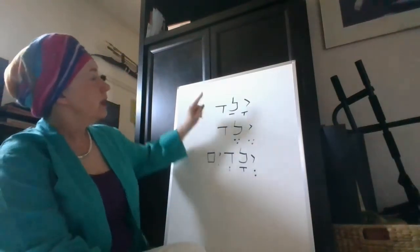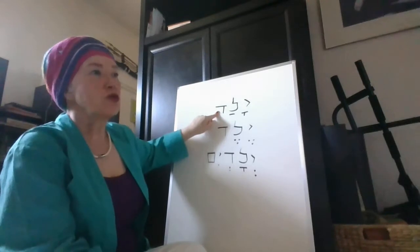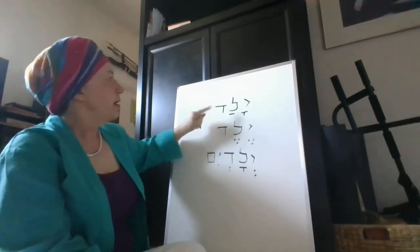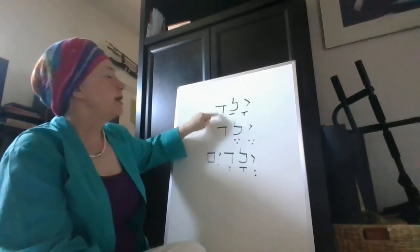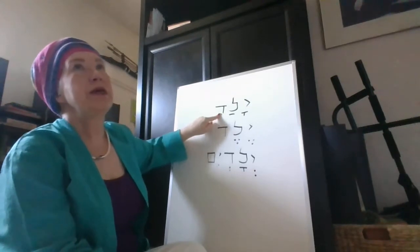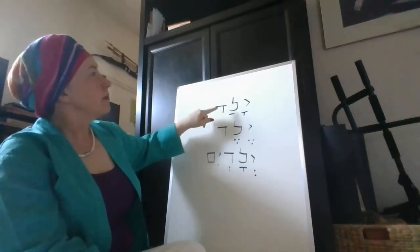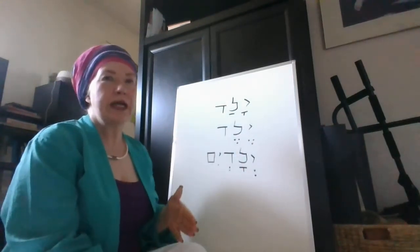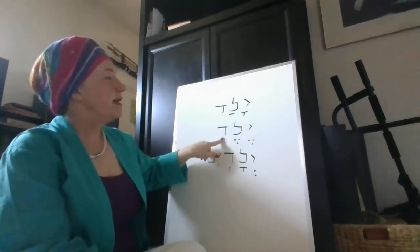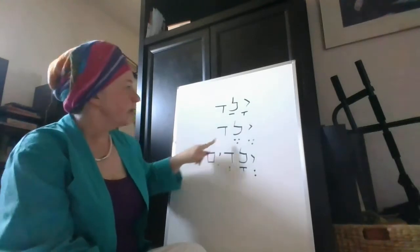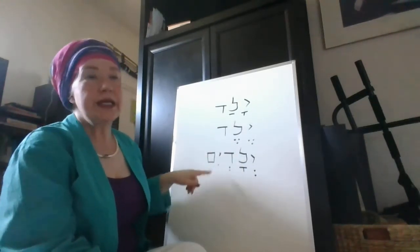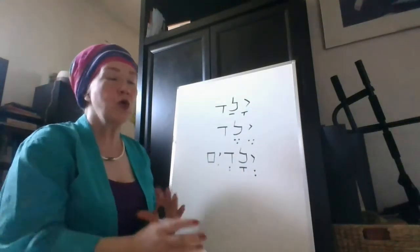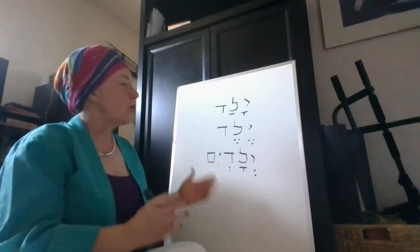So this is he begat, or she gave birth. No, it wouldn't be she gave birth, but Yalad because that would be Yaladah. Anyway, the verb itself in its root form could apply to a man or a woman. A Yaled is a male child. Yaladin is several male children, or it could be a mixed group, boys and girls.